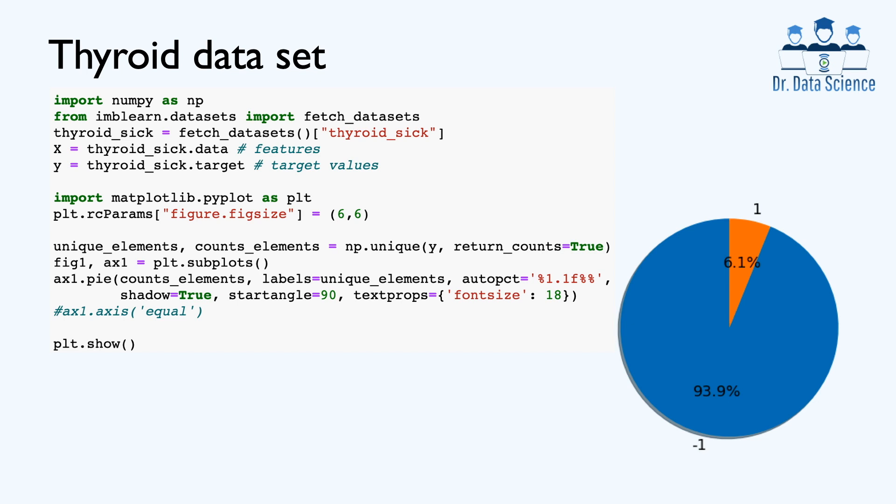To get you a real feel of the problem, we begin by importing the thyroid data set, which contains 52 attributes or features for 3,772 patients. Also, we have target values or labels, either 1 or negative 1, that show whether each patient suffers from a thyroid disorder. In this video, we use the Jupyter Notebook application. However, Python code is Python code, and you can use any other platform such as Google Cloud or Terminal.